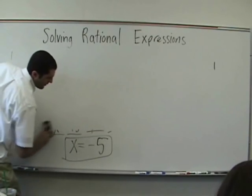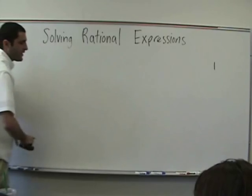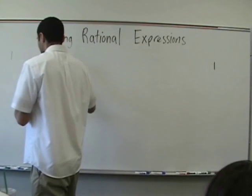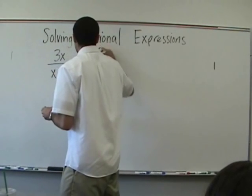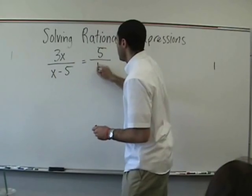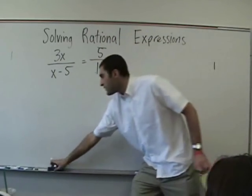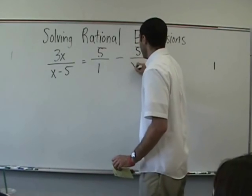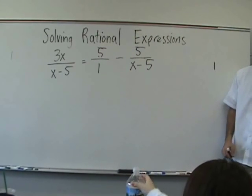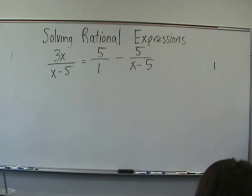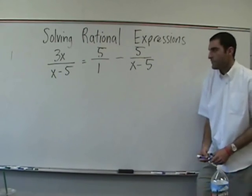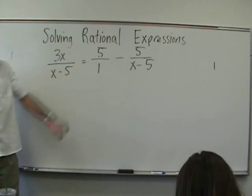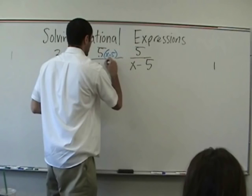To sum up, to add fractions we need a common denominator. It's going to happen again for the next three problems. Three x over x minus five equals five over one minus five over x minus five again. Same concept. X minus five times five. What would you like the common denominator to be? X minus five. What do we multiply top and bottom here to create x minus five? Nothing. What do we multiply top and bottom here? X minus five.